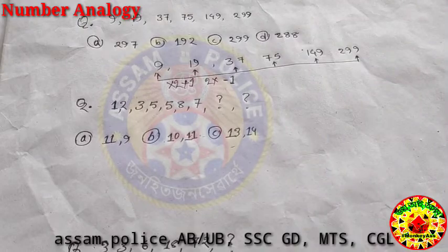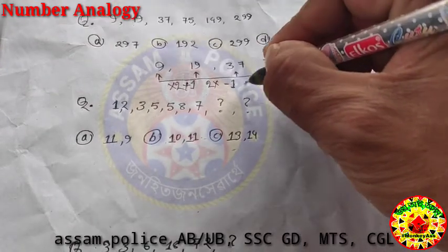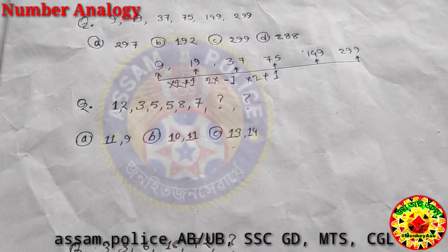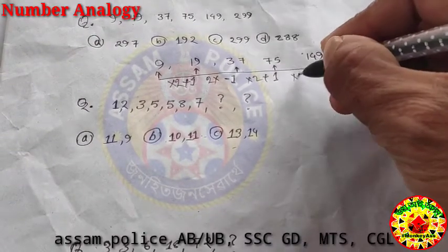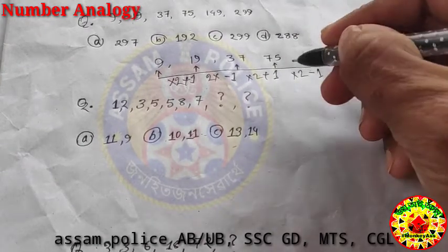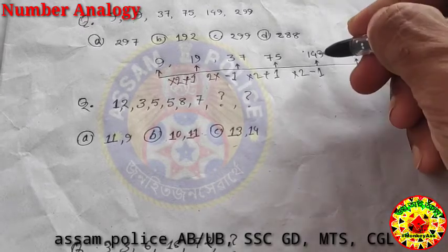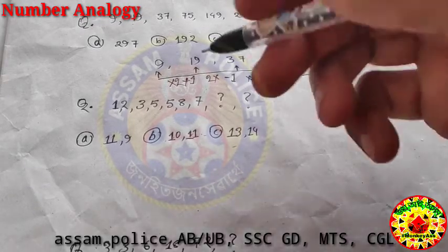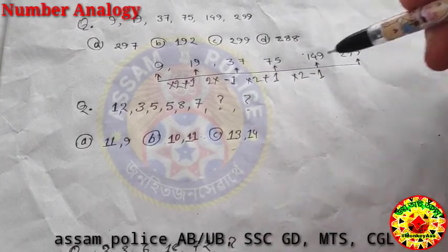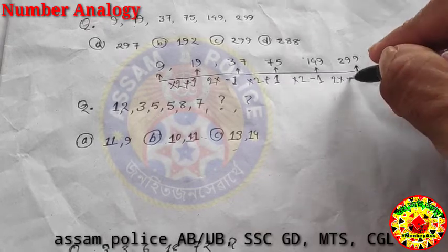So 37 multiplied by 2 gives 74, plus 1 gives 75. Then 75 multiplied by 2 minus 1 gives 149. And 149 multiplied by 2 gives 298, plus 1 is 299. So the pattern alternates: multiply by 2, then plus 1 and minus 1 alternately.